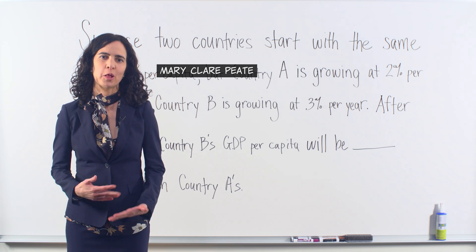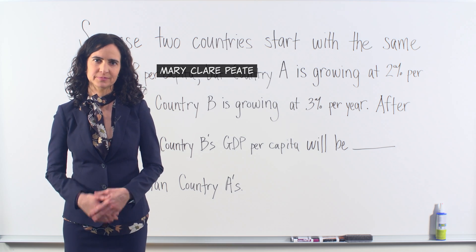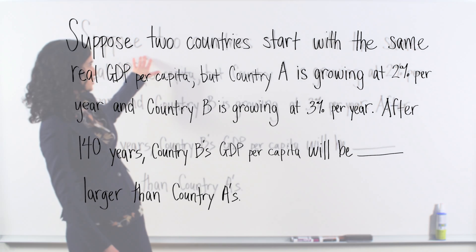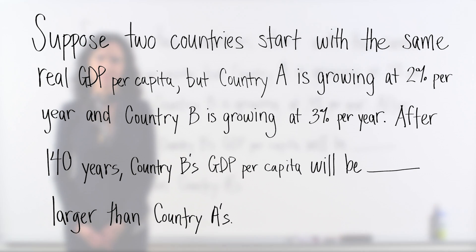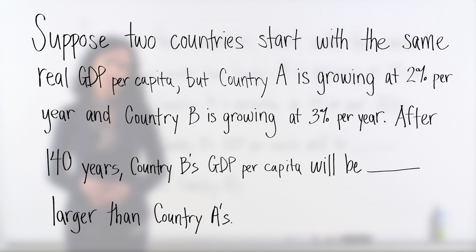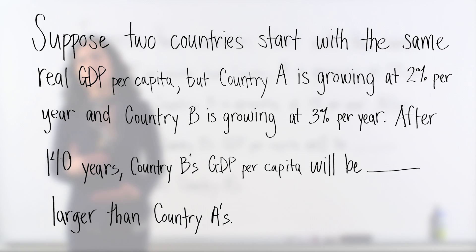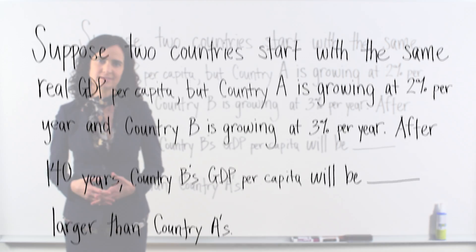Today we're going to answer the following question from our growth rates video: Suppose two countries start with the same real GDP per capita, but country A is growing at 2% per year and country B is growing at 3% per year. After 140 years, country B's real GDP per capita will be how many times larger than country A's?